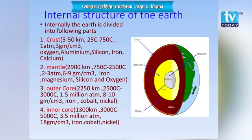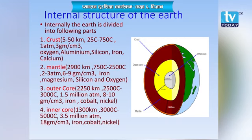The second layer is the mantle — it is the thickest layer, inner to the crust. Its thickness is about 2,900 kilometers. As you go deeper, the temperature increases due to pressure from the upper layers. Its temperature ranges from 750°C to 5,000°C, pressure is about 2 to 3 atmospheric pressure, and density is about 6 to 9 grams per cubic centimeter — density increases as you go deeper. Elements found in the mantle include iron, magnesium, silicon, and oxygen.